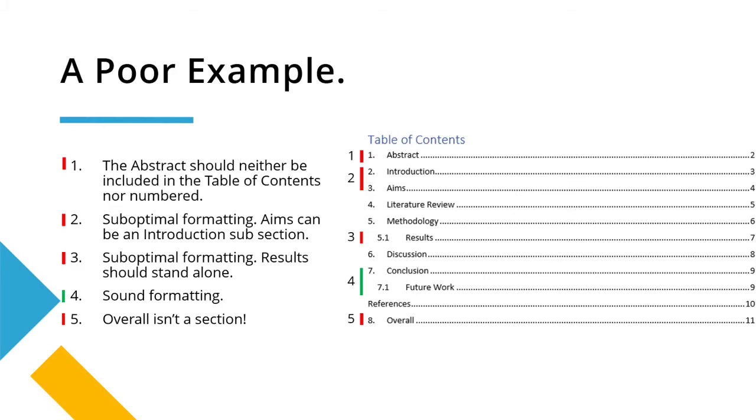So in this poor example, in quotation marks there, poor, I've highlighted five aspects, four that require improvement and one that shows good practice. These are color coded red and green. So let's tackle these chronologically.